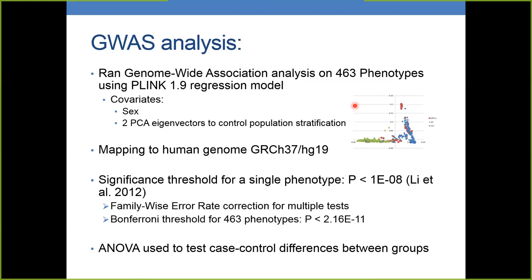Here we have a picture of the two-dimensional PCA eigenvectors, where the green area corresponds to African Americans, the blue area to Caucasians, and red to others — with one corner corresponding to the Asian component. The mapping was done using Human Genome version 19. We used a significance threshold for a single phenotype from Lee and collaborators of 1×10⁻⁸, which is calculated relative to the number of independent markers in the 1000 Genomes admixed panel.